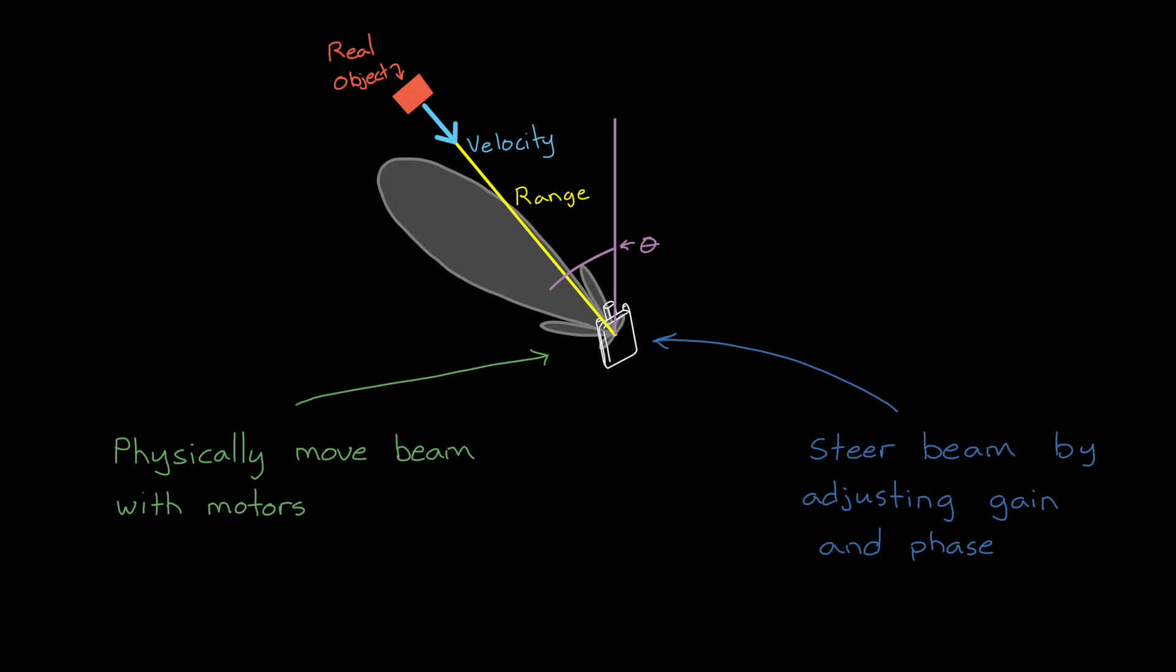But what I want to talk about in this video is that there is a way to determine the angle to an object more accurately than the width of the transmit beam itself. In this way, we can have a wide beam that's fixed and still know where an object is within that beam. And the solution is to have multiple receive antennas.